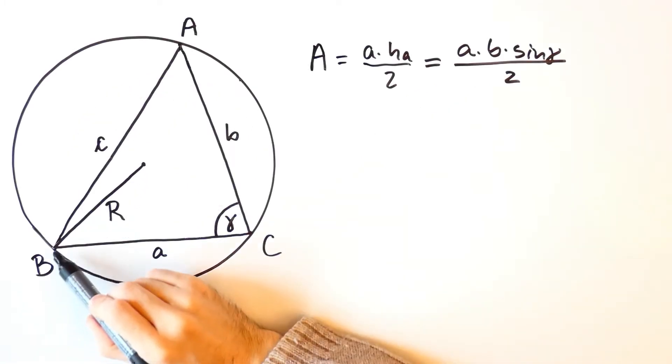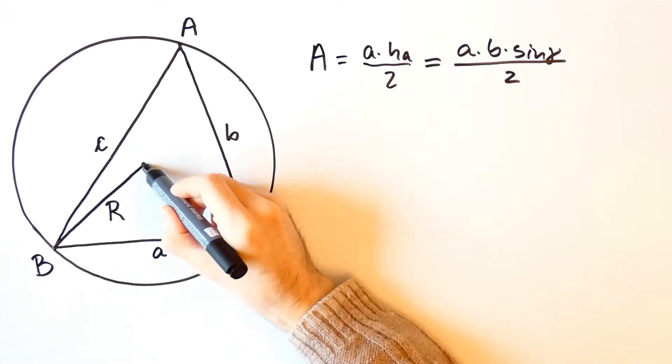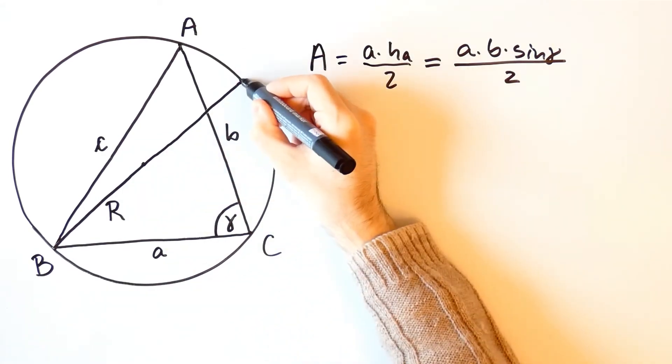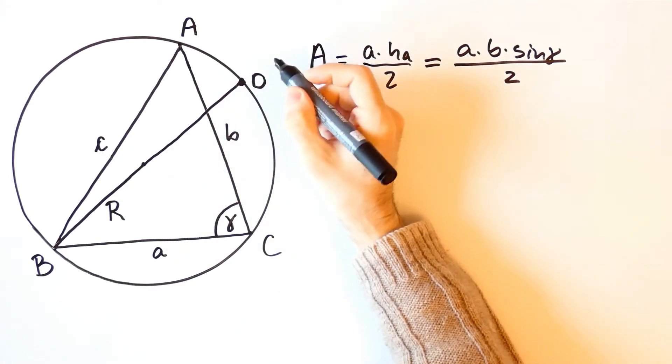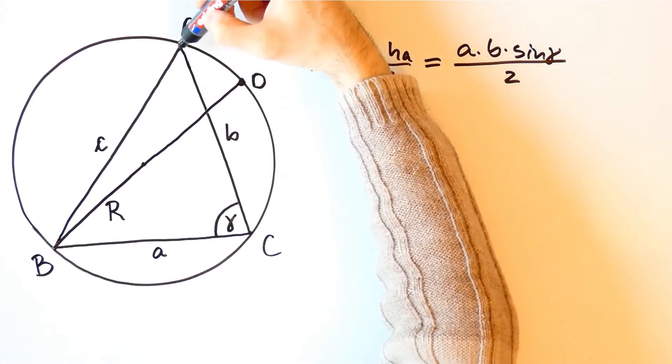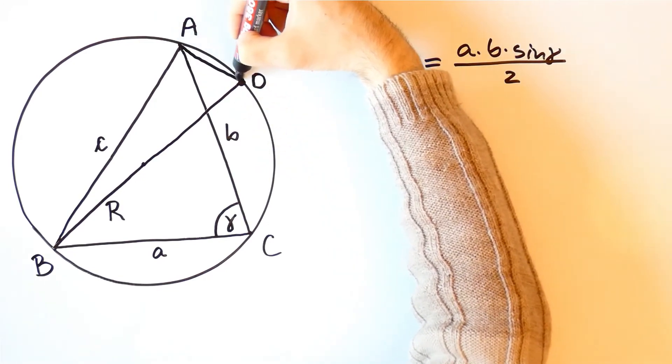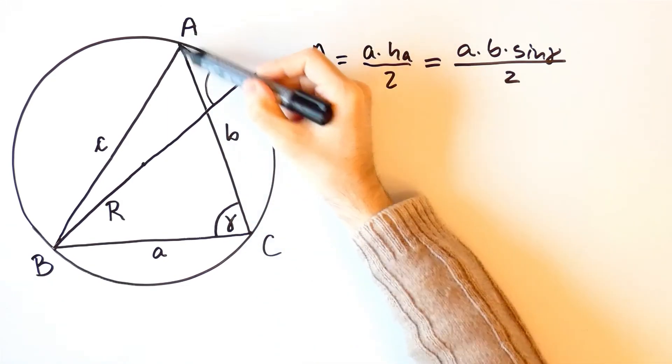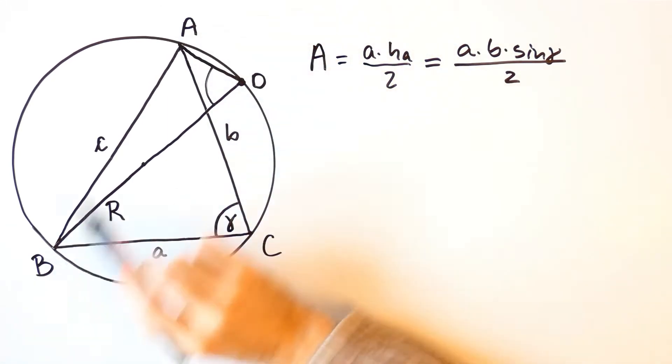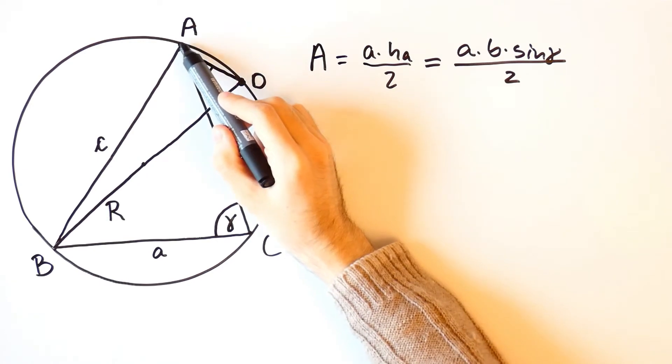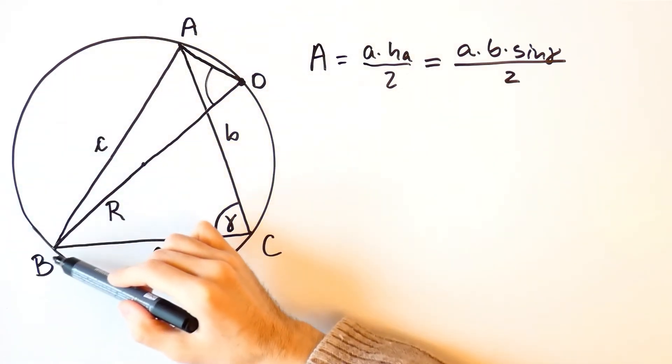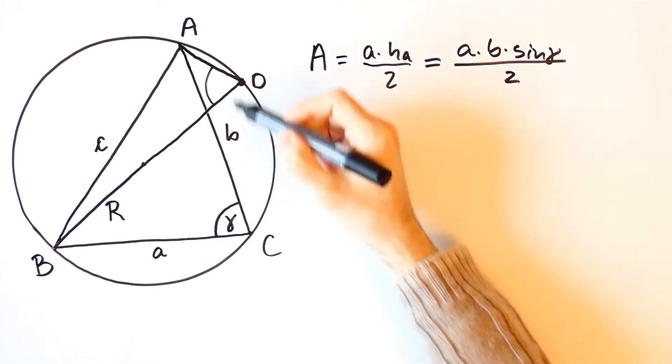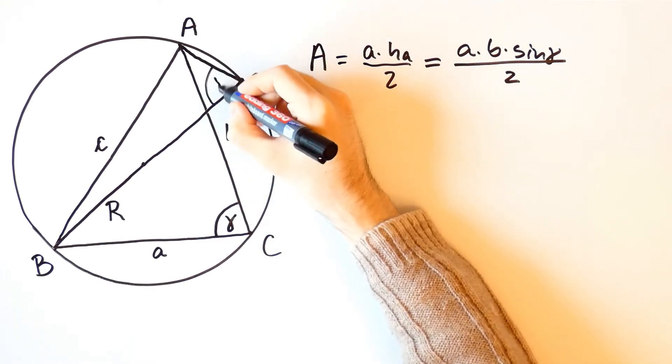Let's draw a diameter from B. And let's call this point D. Now angle ADB and angle ACB both intersect the same arc AB, which means that they are equal. So this angle is also gamma.